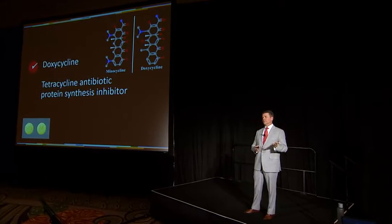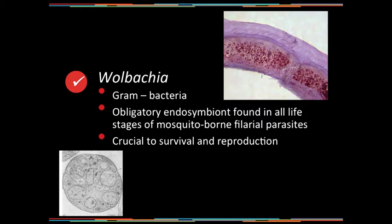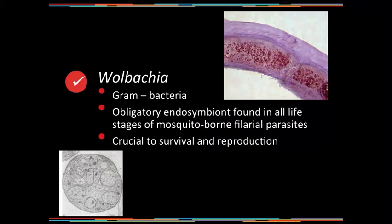Currently, we typically recommend doxycycline. The question is: why do we use it, and where does it play a role in the three phases of disease management? When we talk about doxycycline, we have to understand what we're going after — we're not going after the parasite per se, we're going after Wolbachia. Wolbachia is a gram-negative bacterial endosymbiont of heartworms, found in all filarial parasites that are mosquito-borne, and it is crucial to both survival and reproduction of the heartworm.